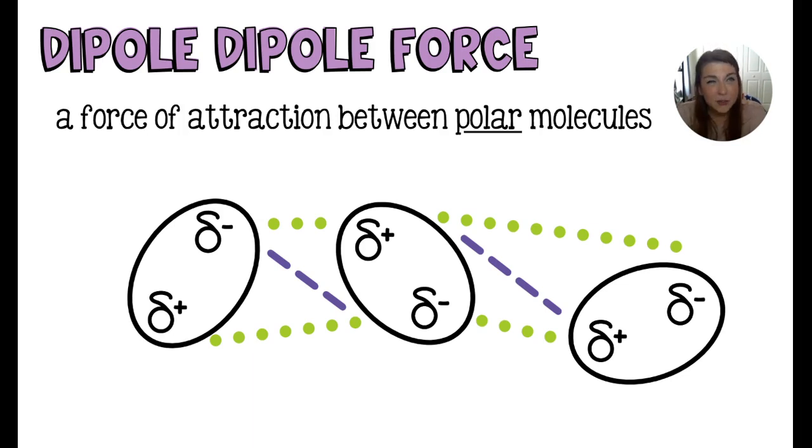You can kind of sort of relate this to the crystal lattice and ionic bonding. You have a full positive ion and a full negative ion, and they're going to hang out with each other because they are attracted to each other. Positive and negative attract. It's kind of the same thing here, except it's not as strong of an attraction because it's not a full positive or a full negative. It's just a partial charge.